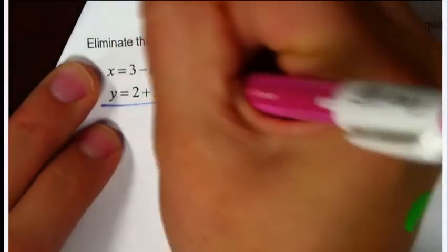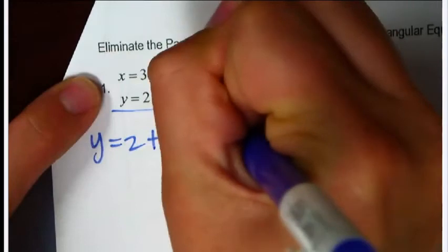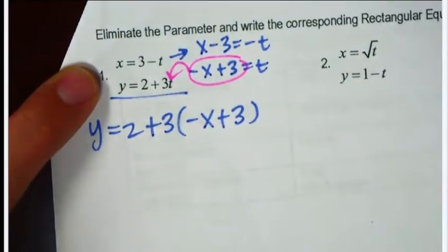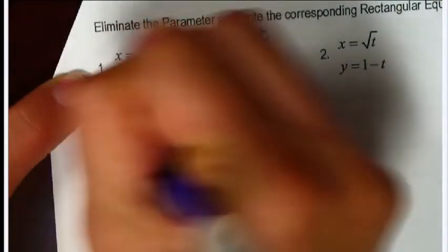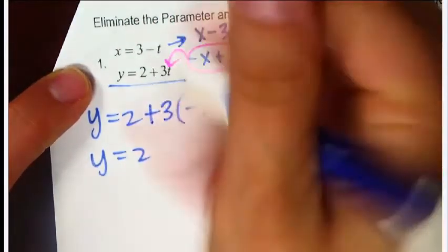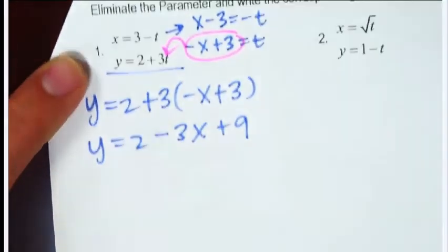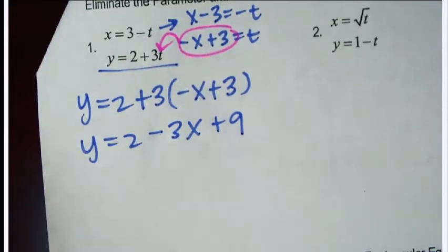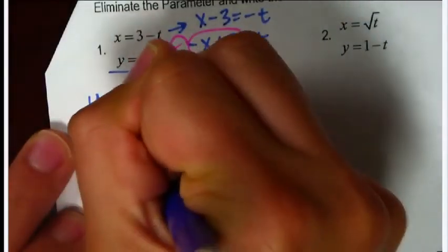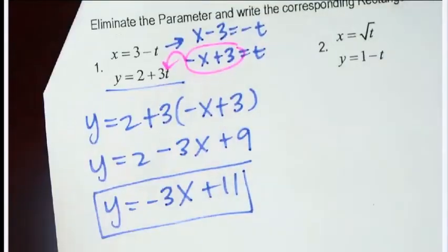Take that value of t and plug it into the y equation: y equals 2 plus 3 times (negative x plus 3). Distribute the 3: y equals 2 minus 3x plus 9. Rewrite in correct order combining like terms: y equals negative 3x plus 11. Now we have a rectangular equation.